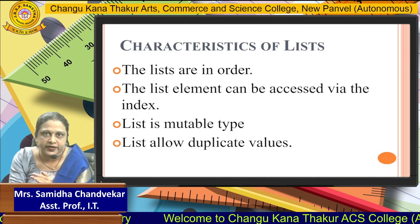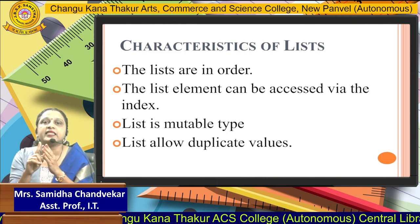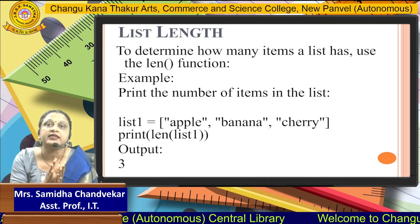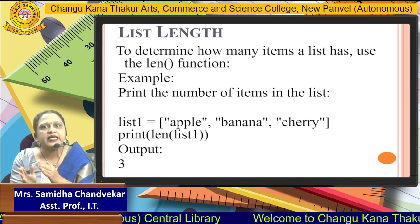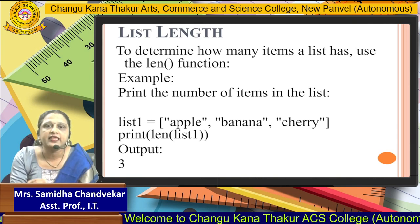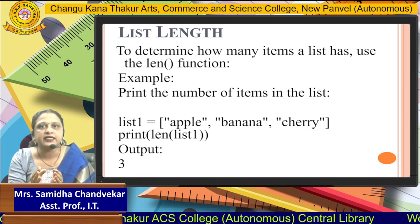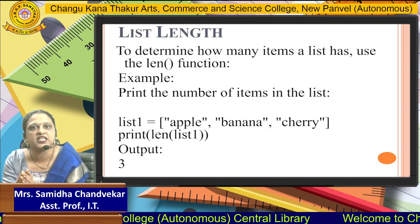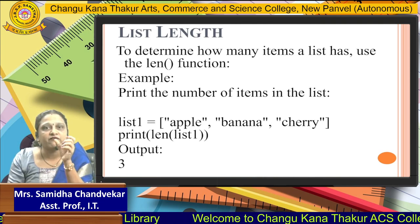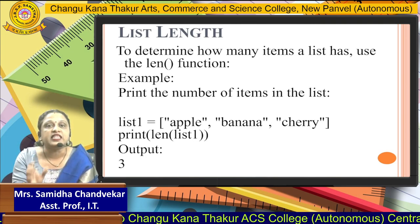The main characteristics are: it is ordered, it has access via the index, it is a mutable type, and it allows duplicate values. Now, we want to see the list length. Length determines how many items are in your list. There is a len() function — using that we can get the number of items. For example, if a list has three items — apple, banana, cherry — when you print len(list1), you will get the output three.